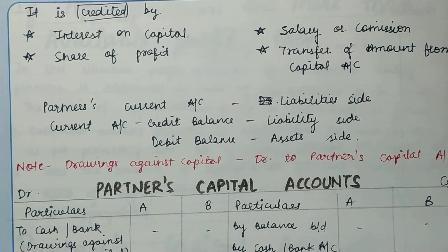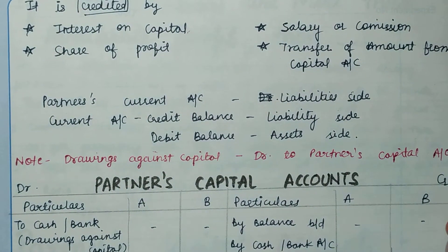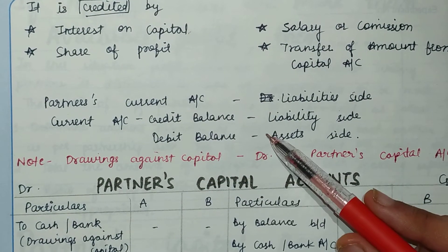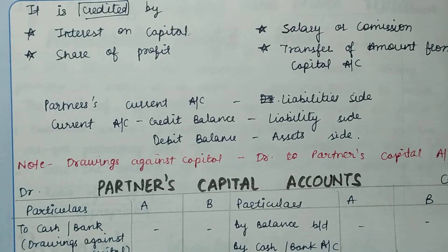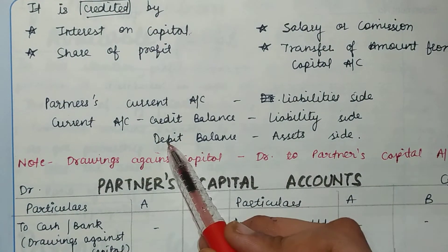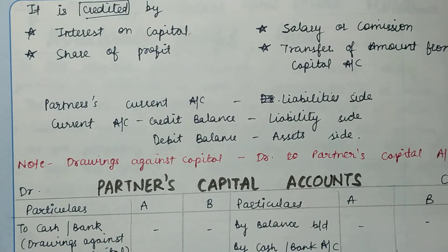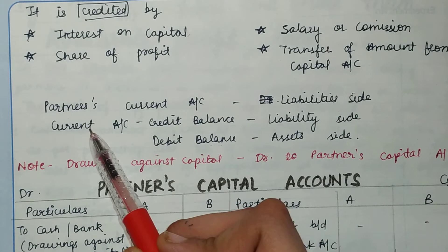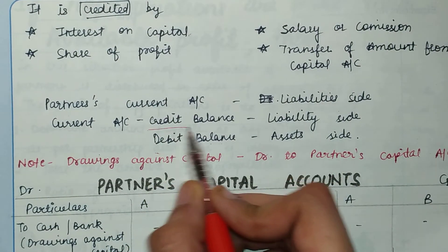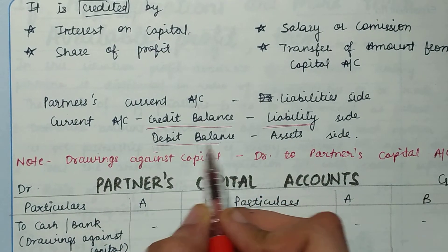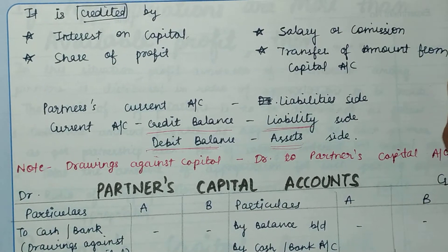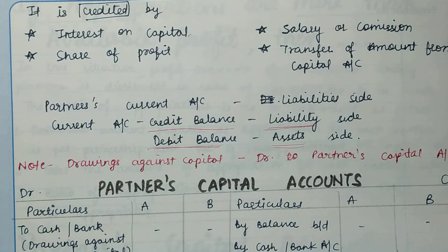The partners' current account is a liability. If the current account has a credit balance, it will be shown on the liability side of the balance sheet. But if it has a debit balance — which can happen if the partner has overdrawn — then it will be shown on the asset side of the balance sheet. The balancing figure can come from either side depending on the prevailing situation.